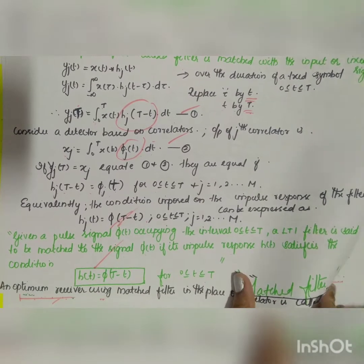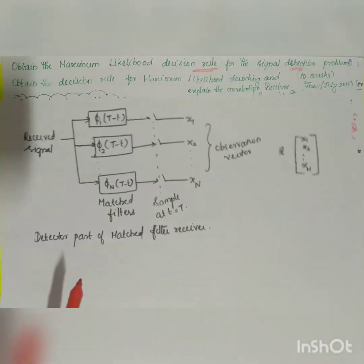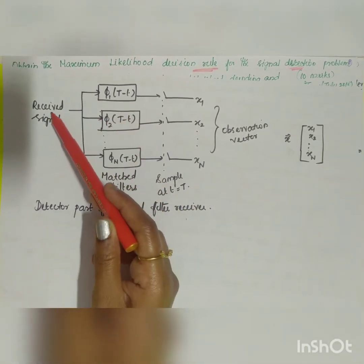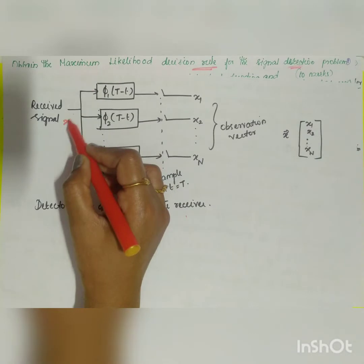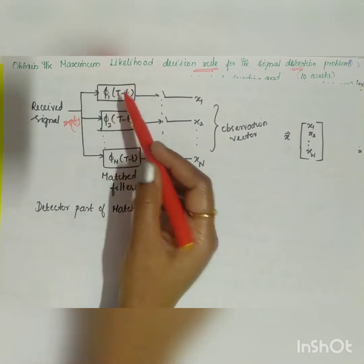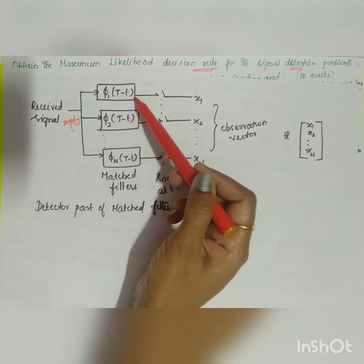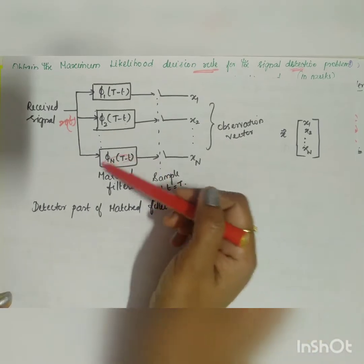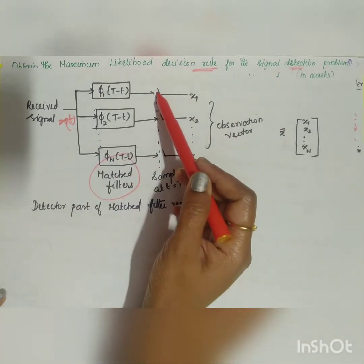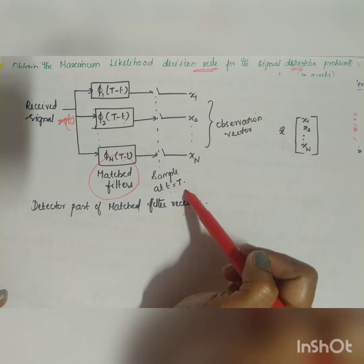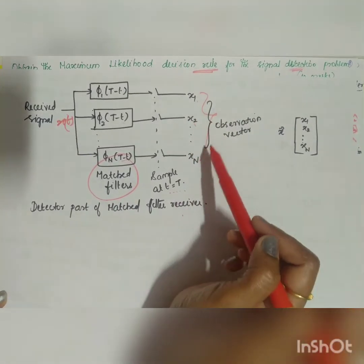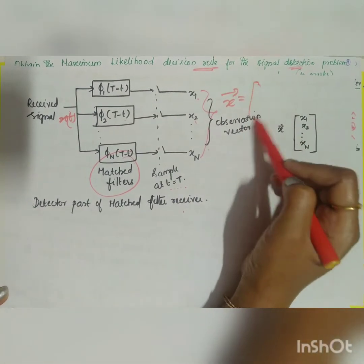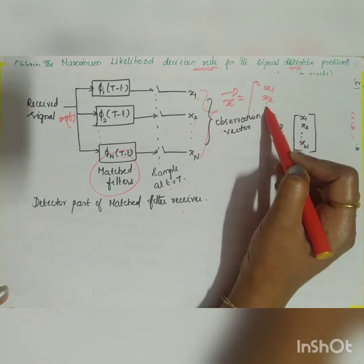The detector part of the matched filter receiver can be drawn as follows: the received signal x(t) is given to matched filters φ_1(T − t), φ_2(T − t), ..., φ_N(T − t). These are sampled at time t = T, giving the observation vector with components x_1, x_2, ..., x_N. So the observation vector x = [x_1, x_2, ..., x_N].